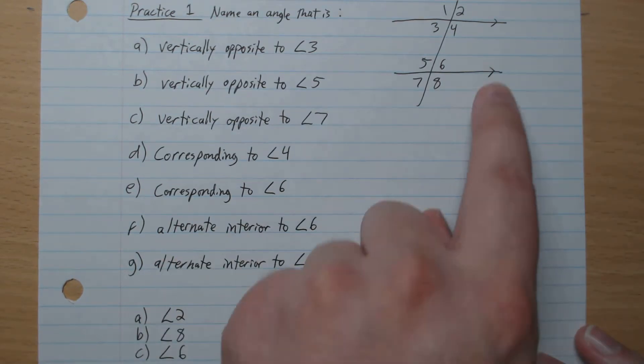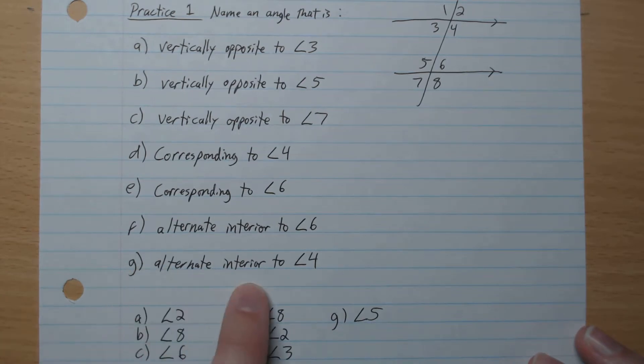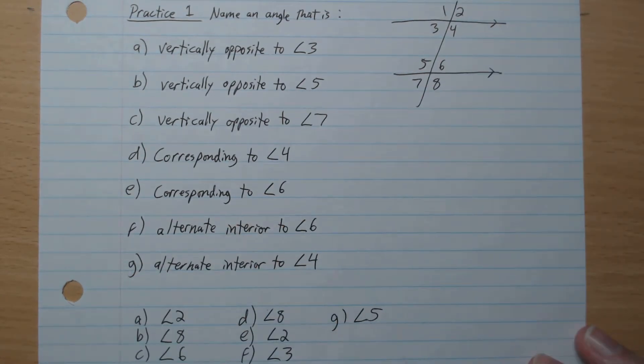Alternate interior to 6. That's our Z, so 3. Alternate interior to 4, which is 5.